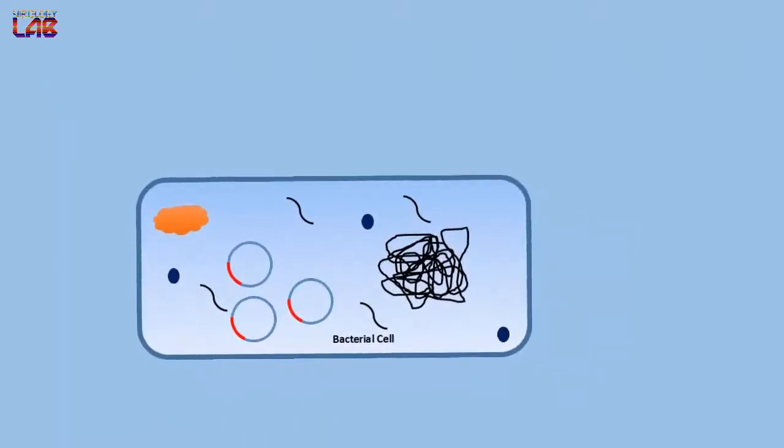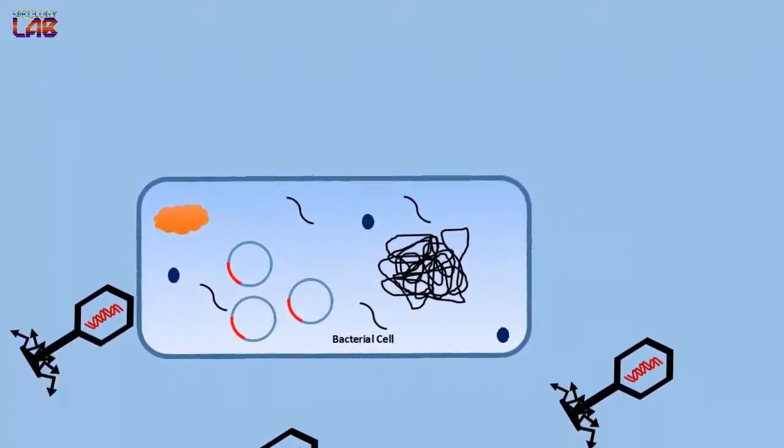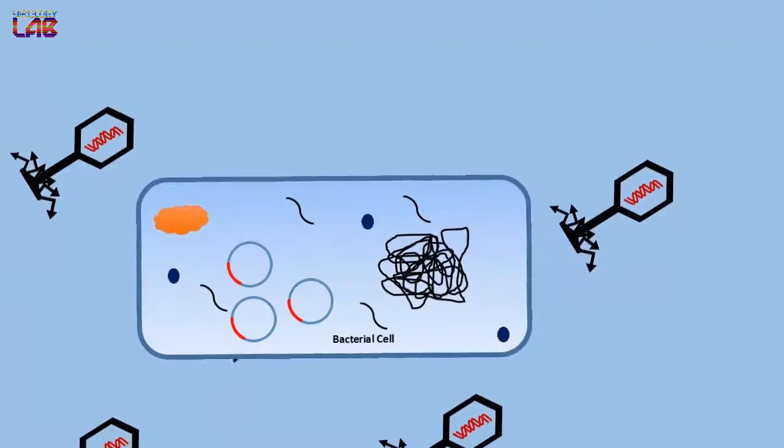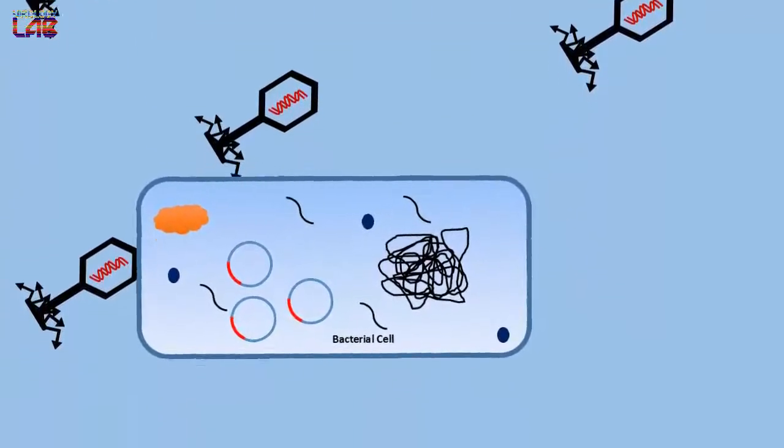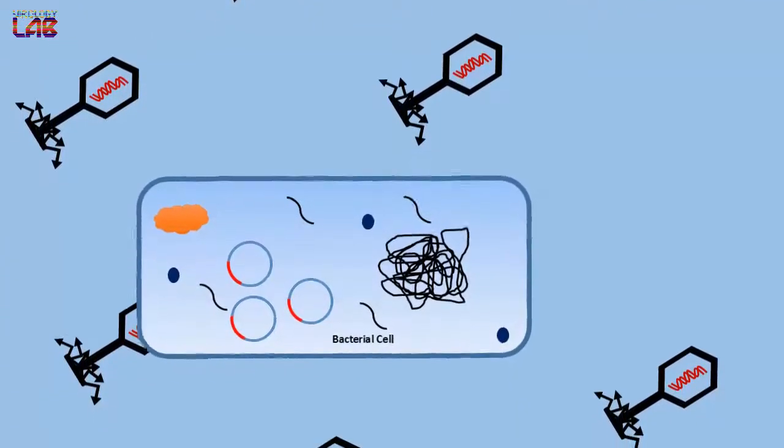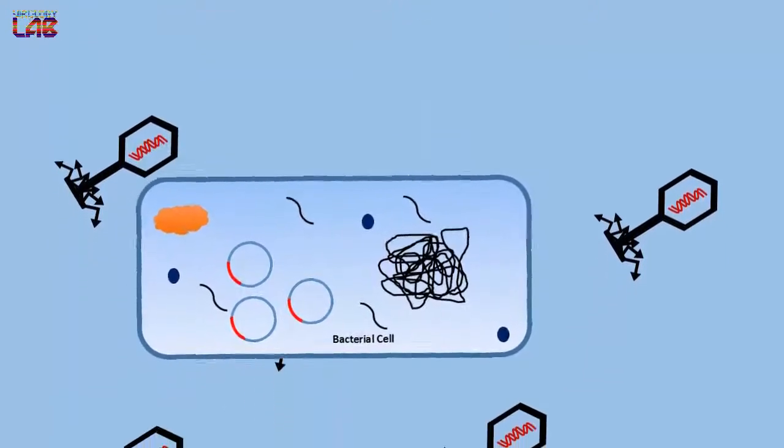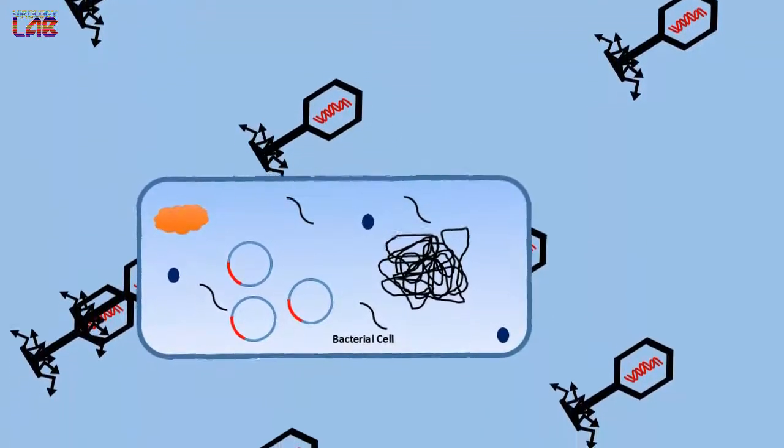CRISPR-Cas9 is a mechanism adopted by prokaryotic-like bacterial cells to protect themselves from the attack of DNA viruses. This unique system is now widely used in various fields of life science to edit genomes and for other purposes.